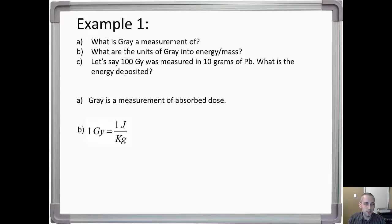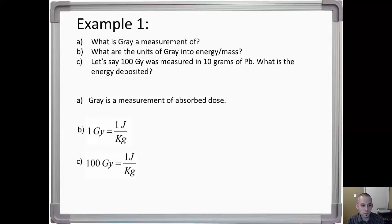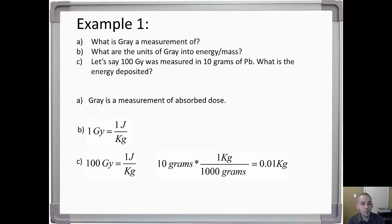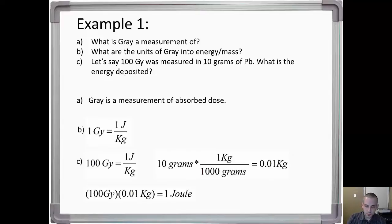Here's a quick example to show a unit conversion: 100 gray was measured in 10 grams of lead — what is the energy deposited? 100 gray, converting to joules per kilogram, and 10 grams converts to 0.01 kilograms. So 100 gray times 0.01 kilograms equals one joule. It's very very important that you remember that one gray is equal to one joule per kilogram — you should know that off the top of your head.